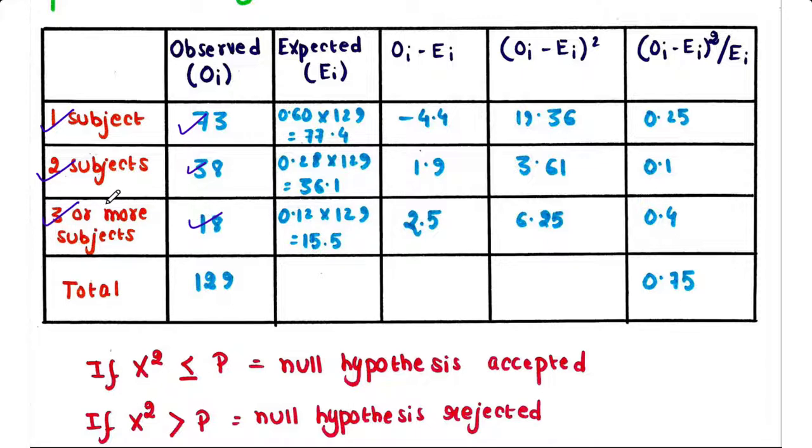You have chosen total 129 students. These values are your observed values. Your work is to determine whether the previous survey report supports your study or not. In order to do so, you have to perform a statistical test that is nothing but a chi-square test.